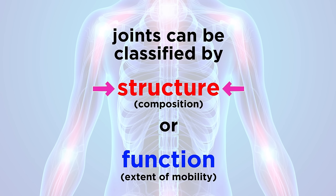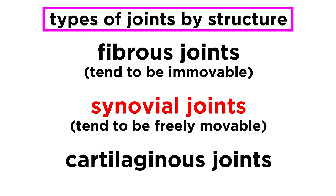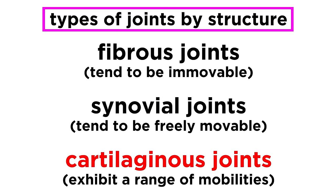If going by structure, we can discuss fibrous joints, which tend to be immovable; synovial joints, which tend to be freely movable; and cartilaginous joints, which exhibit a range of mobilities.